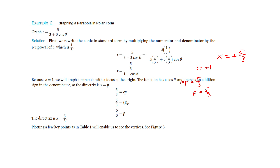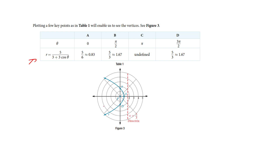Now we're going to plot some points to help us get the picture. We're graphing in a polar system, so our angles are still 0, pi over 2, pi, and 3 pi over 2, but our values of R correspond to concentric circles. We'll use four key points. Plugging in 0: cosine is 1, giving us five sixths. At pi over 2: cosine is 0, giving us five thirds. At pi: cosine is negative 1, making the denominator 0 — undefined. At 3 pi over 2: cosine is again 0, giving us five thirds.